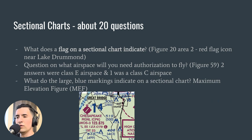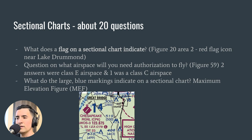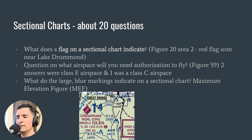There's a question on what airspace you'll need authorization to fly in. Two answer choices will be in shaded magenta, indicating class E airspace, which goes up to 700 feet above ground level. Another option you'll need to identify on your sectional chart is class C airspace — you definitely need authorization before flying in class C.